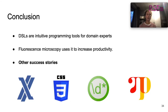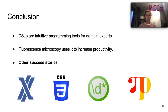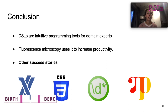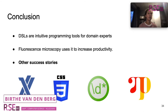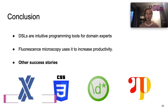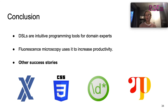But fluorescence microscopy is not the only success story. There are multiple DSLs around in the world. Think about Haxl, which is a DSL by Facebook that they use for fighting spam. But also famous DSLs such as CSS or regexes have become very successful. Pyro is a probabilistic domain-specific language that is used by Uber to model their traffic.